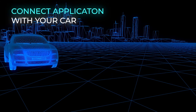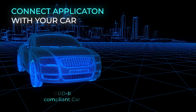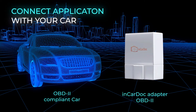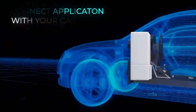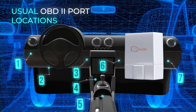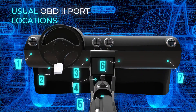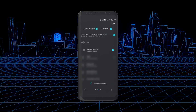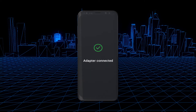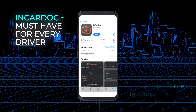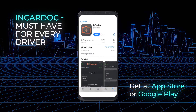Connect the application with your car. All you need is an OBD2 compliant car and a professional InCarDuck adapter, or any other OBD2 scanner. Start the car engine and plug the adapter into the OBD2 port of your car, then connect with the InCarDuck app and enjoy using. Download InCarDuck for free from Google Play or the App Store.